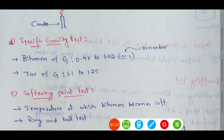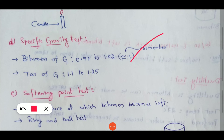For pure bitumen, the specific gravity value is 0.97 to 1.02, which is approximately equal to 1. So the specific gravity value for pure bitumen is taken as 1.